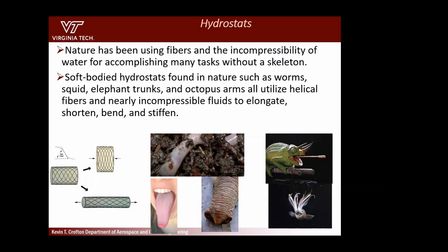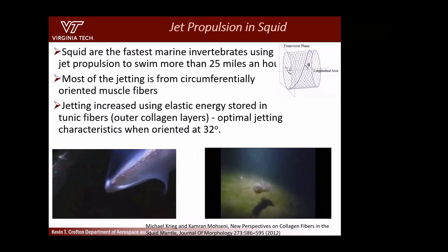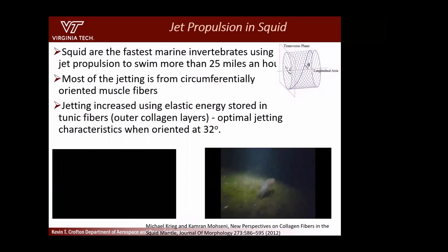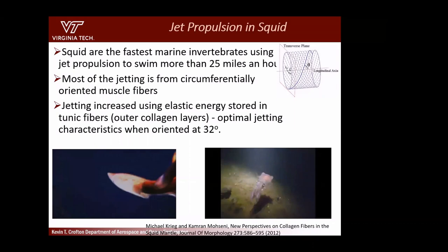Many animals in nature use stiff fibers embedded in soft elastomer — a tongue, the trunk of an elephant, an earthworm, and a squid. They all use stiff fibers and the incompressibility of fluid for shortening, bending, and stiffening. We call these hydrostats. Squid can travel up to 25 miles per hour — they basically have jets. Muscles are arranged circumferentially around a pouch; when they want to jet, the muscles squeeze and force fluid out. Other fibers orient that jet in specific directions.